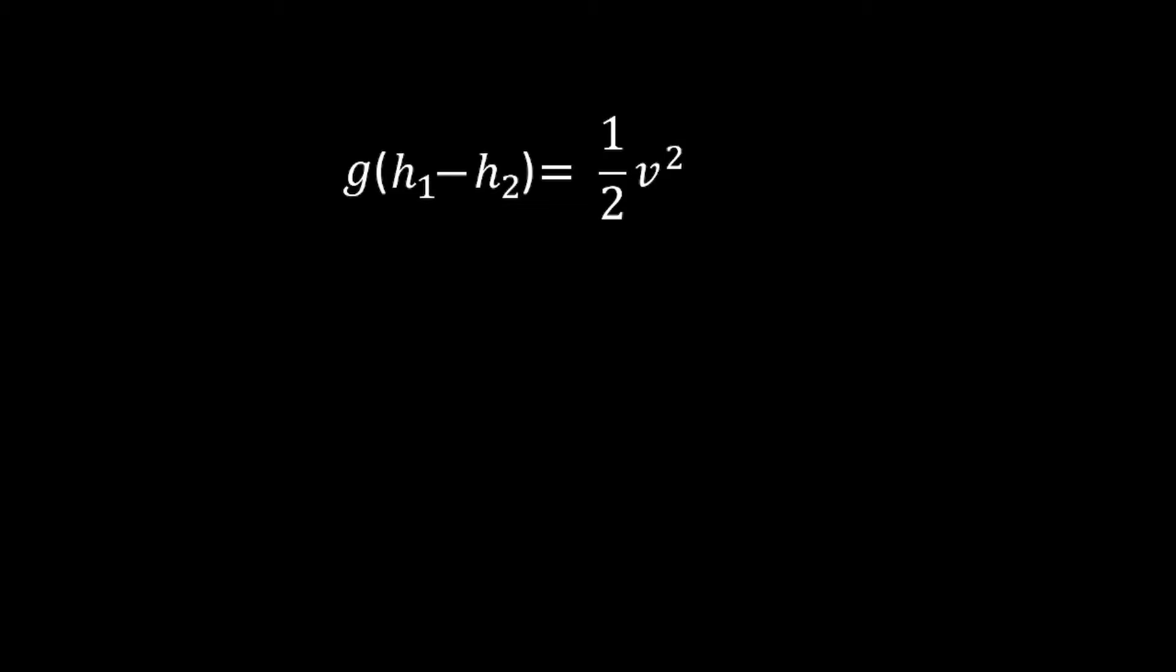Now we multiply both sides by two and take the square root. So now we get that the velocity is equal to the square root of two times g times the difference in heights.